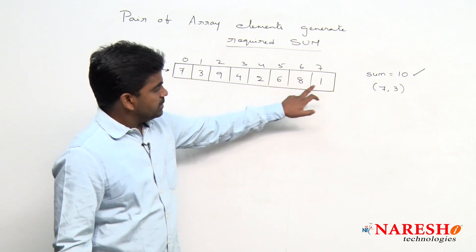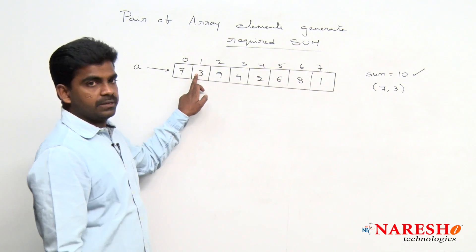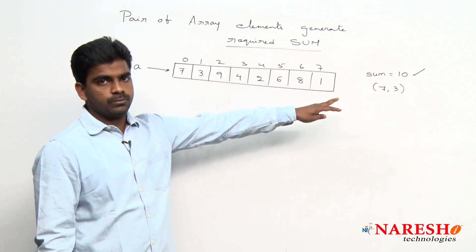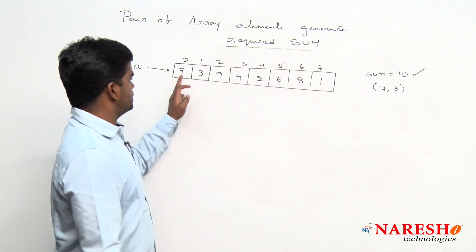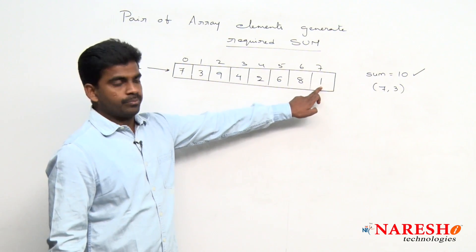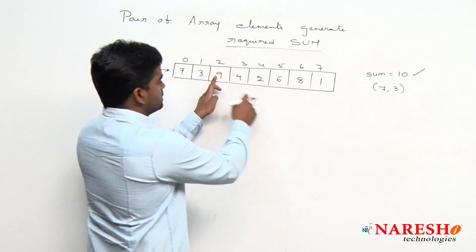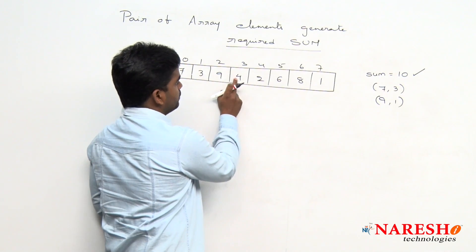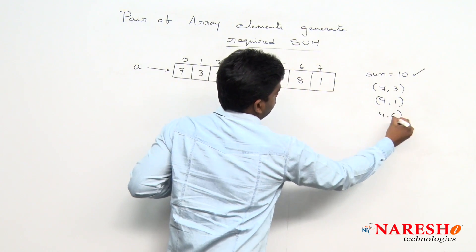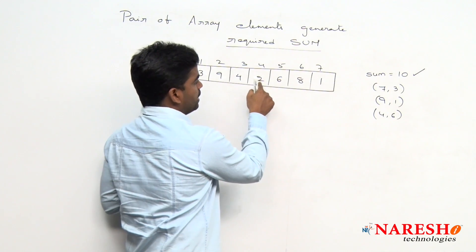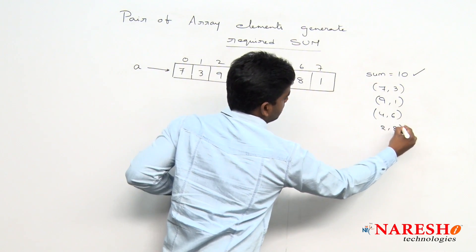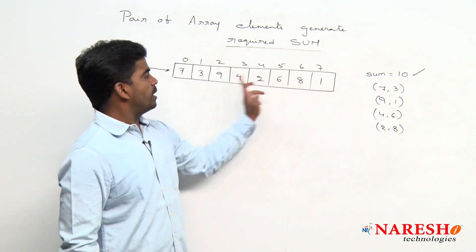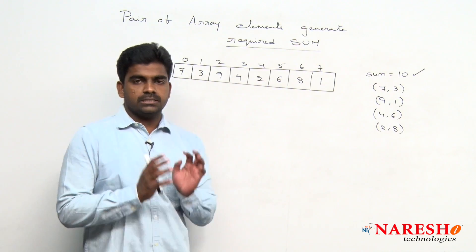Next, when compared with 9, 9 plus 1 gives the sum — so 9 comma 1 is a pair. When compared with 4: 4 comma 6. When compared with 2: 2 comma 8. So these are 4 pairs. But 6 comma 4, 8 comma 2, 1 comma 9, 3 comma 7 are not allowed — only unique pairs.